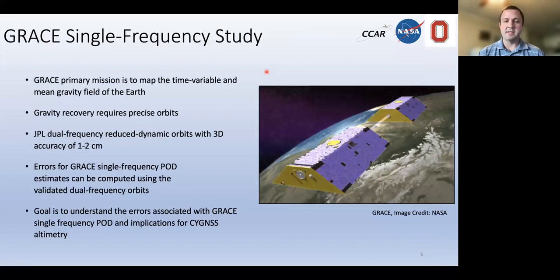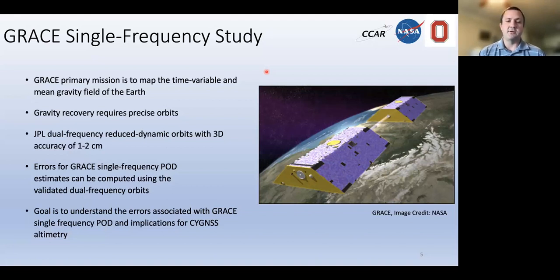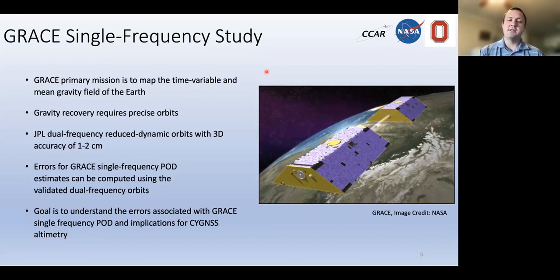GRACE is used as a method for evaluating our solution strategies with Cygnus. Because its primary mission is to map the time-variable and mean gravity field of the Earth, it requires precise orbits. Being dual-frequency, it can remove the ionosphere and single-receiver ambiguity resolution is possible, so GRACE can achieve orbit accuracies of a few centimeters — much more accurate than what we'd expect from a single frequency receiver. Therefore, we can treat GRACE orbits as truth and compare against single-frequency POD strategies, then extend those error findings to Cygnus.